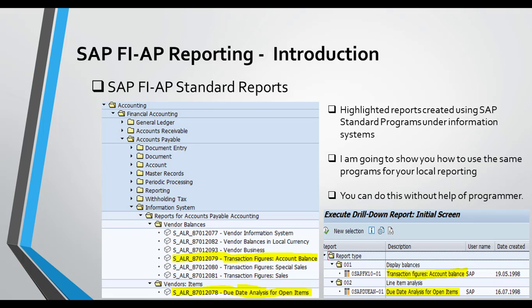Here you can see the SAP AP standard reports for accounts payable. You can use the transaction code FI AP to see all the accounts payable reports. These highlighted reports in yellow are created using the program we are going to use for our AP reporting. You can also create your own local reports apart from the SAP standard reports — it's very easy and flexible.